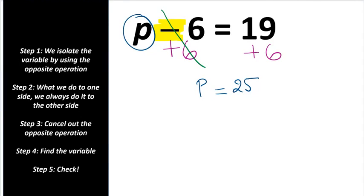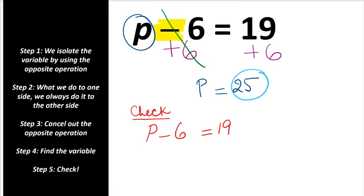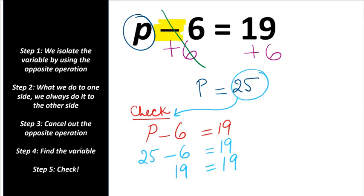Let's check our work. Copy down the equation and substitute 25: 25 minus 6 is 19. 19 equals 19 — the right side equals the left side. Give yourself a check mark.